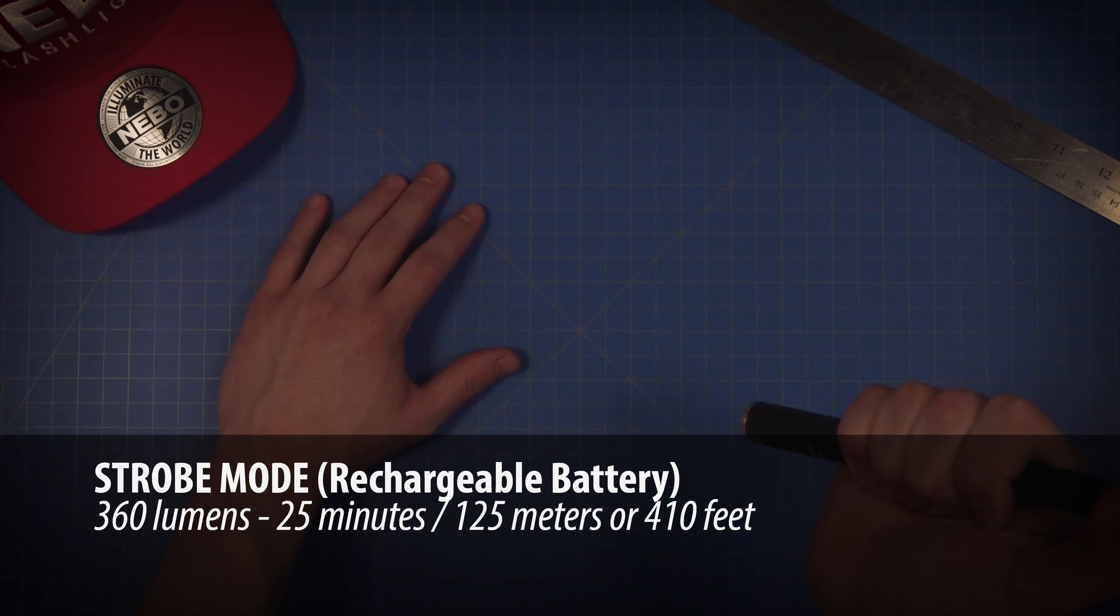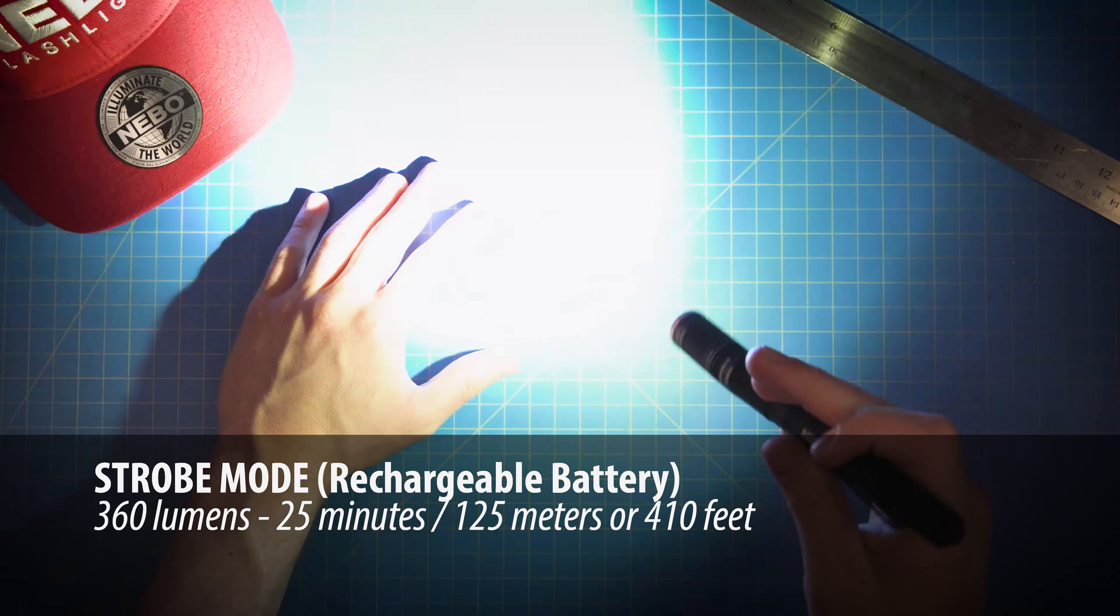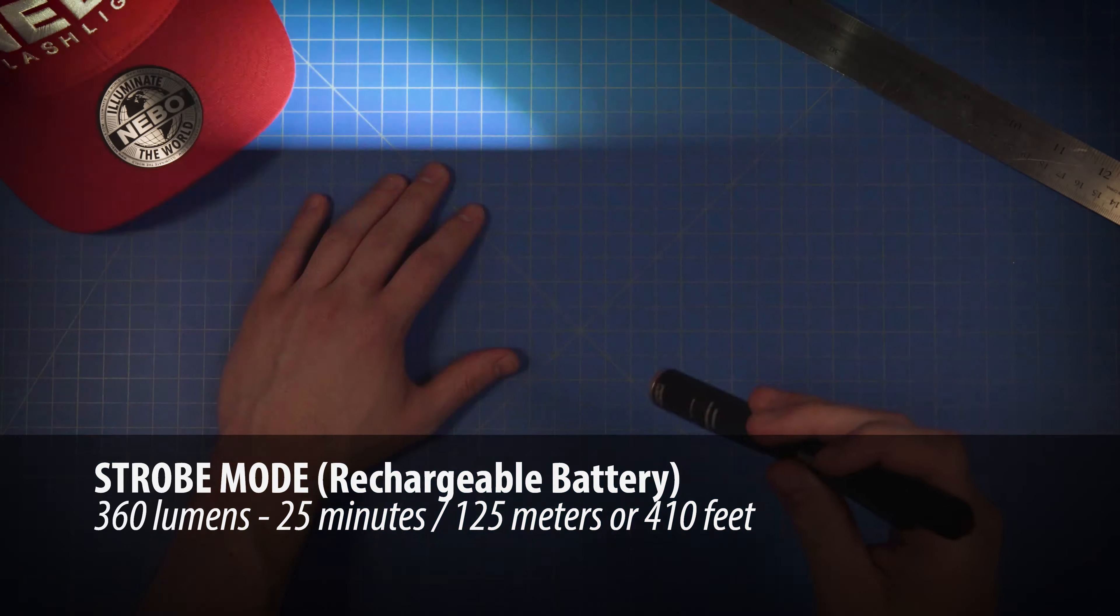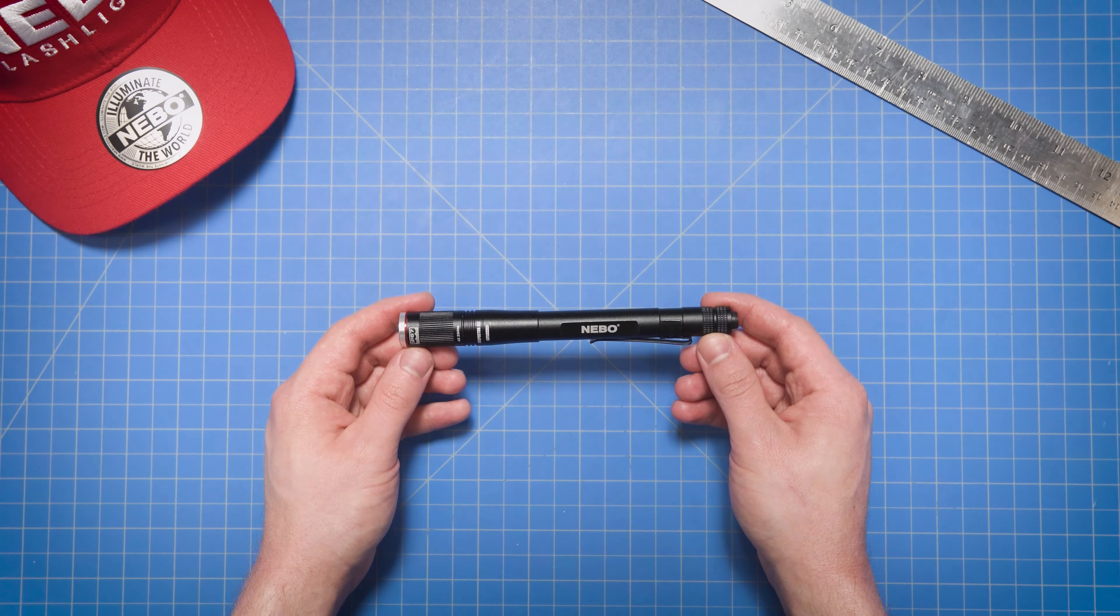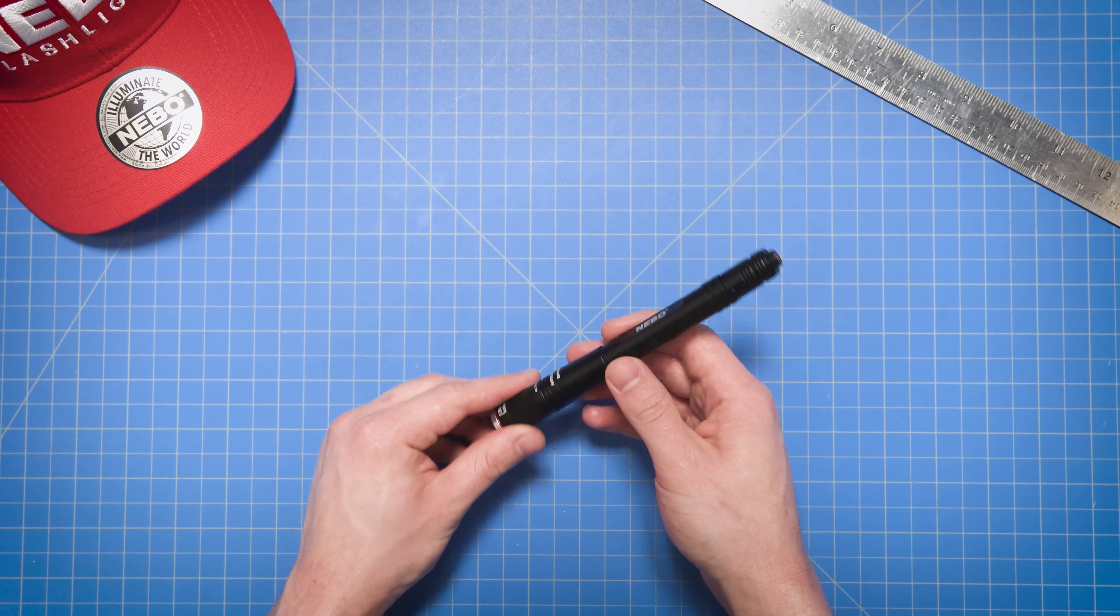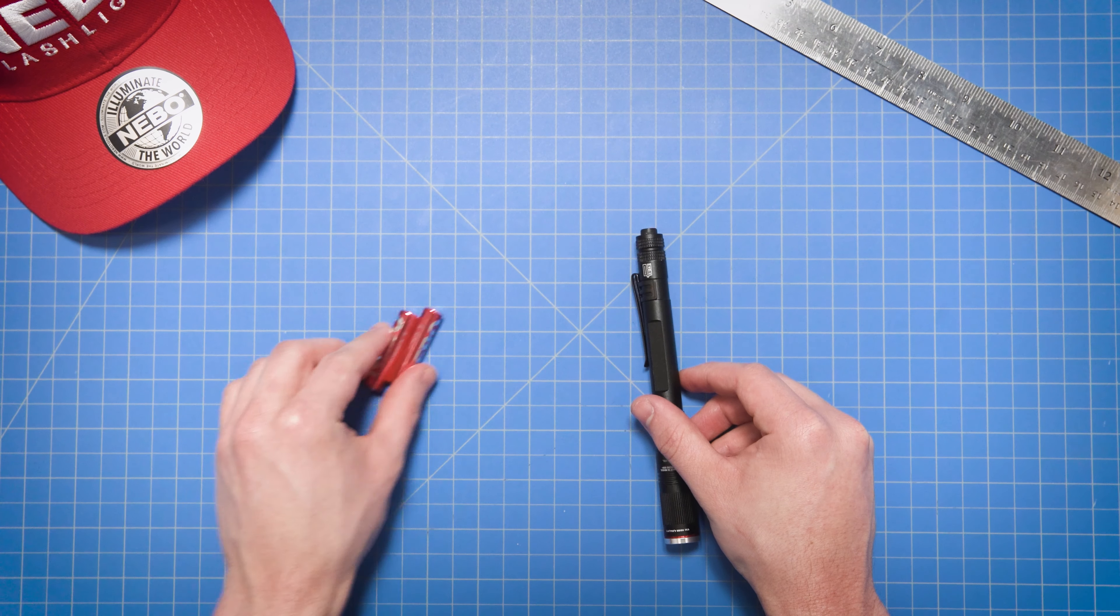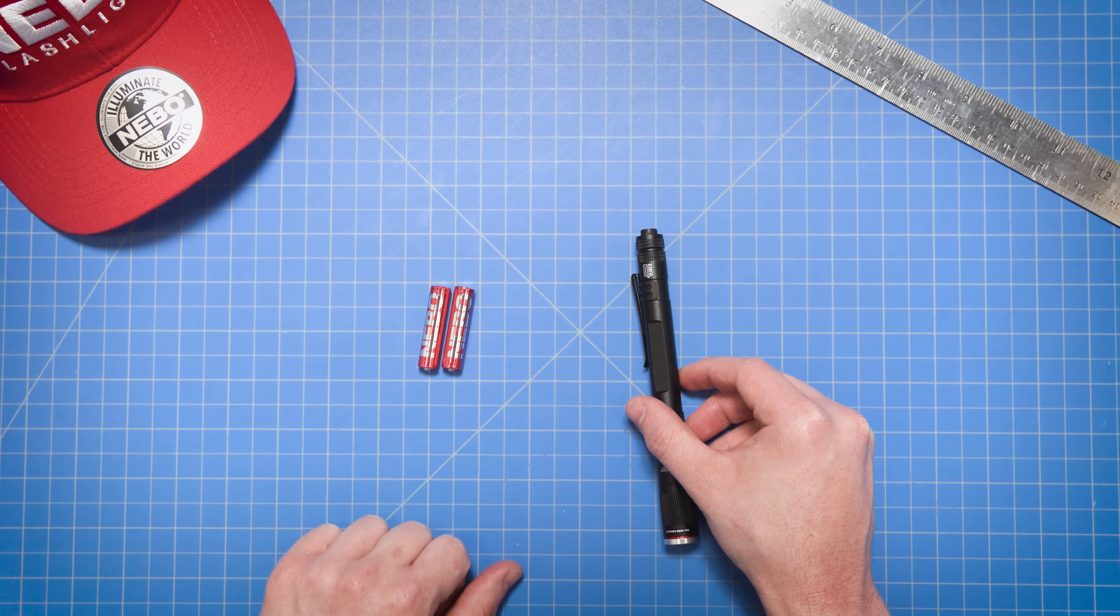And the last mode is strobe, which is up to 360 lumens, shining at a distance of up to 125 meters, or 410 feet, for 25 minutes. Don't have time to wait on a charge? No problem. The Inspector RC is equipped with Nebo's FlexPower technology, meaning it can operate on the included rechargeable battery or on two regular alkaline AAA batteries.